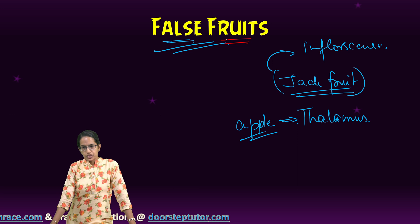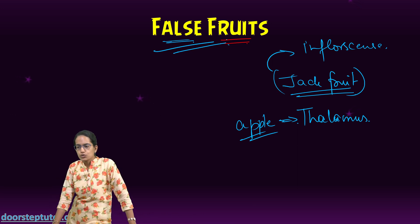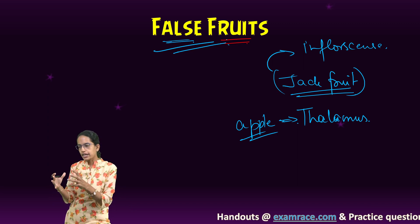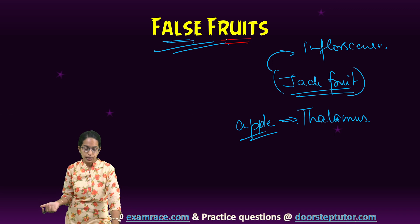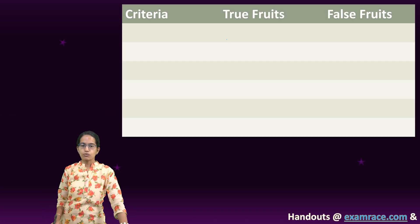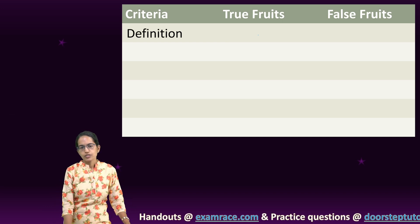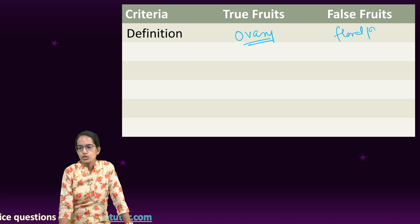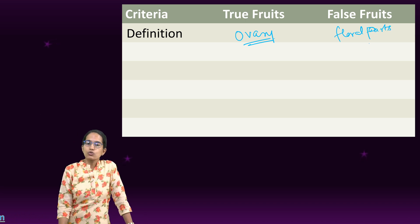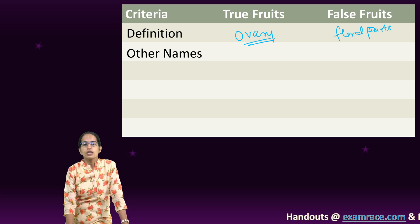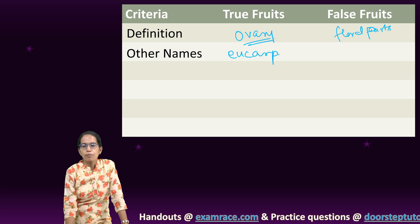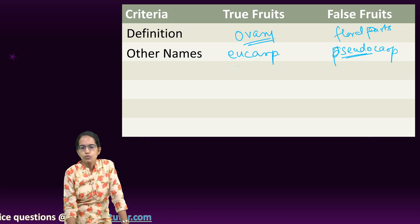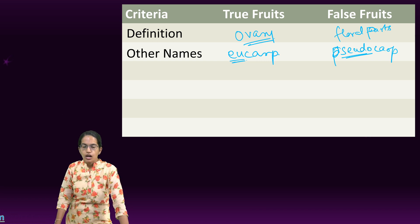The major similarity between false fruit and true fruit is that both contain the structural parts that enclose the seed, and both have juicy pulp which is sometimes aromatic in nature. The another name for true fruit is eucarp, and for false fruit, we call it pseudocarp — pseudo means false, eucarp means true.